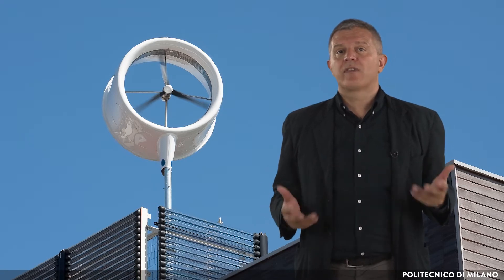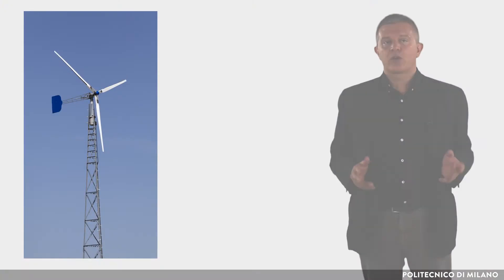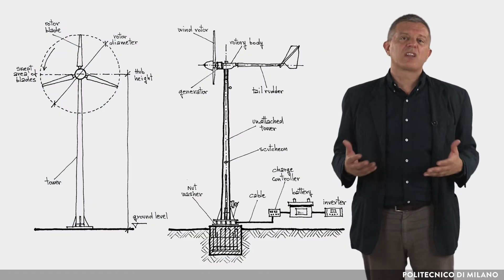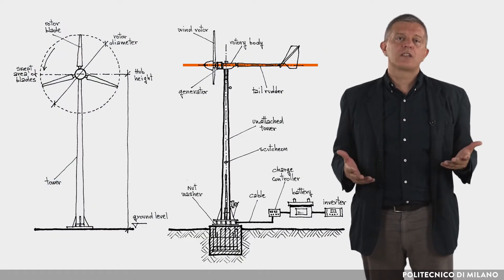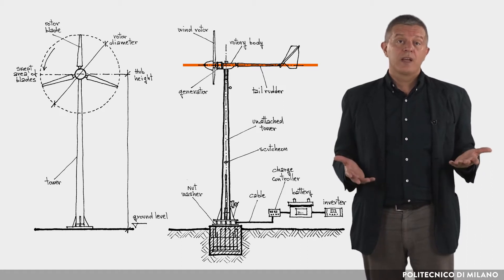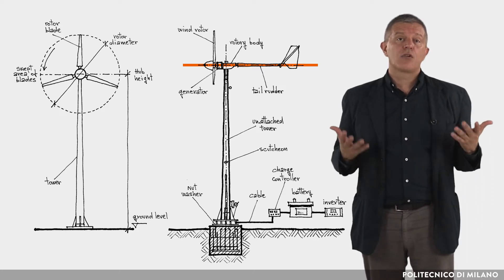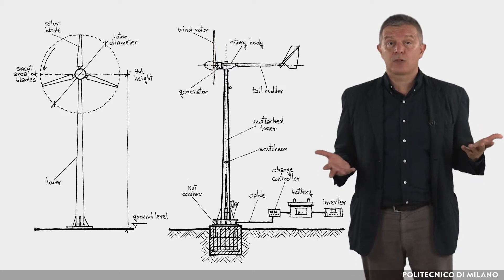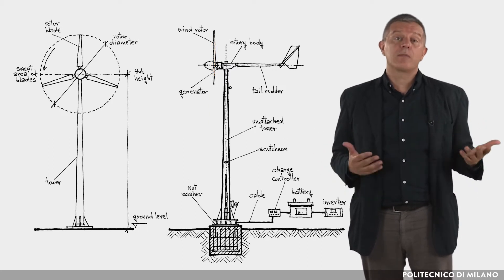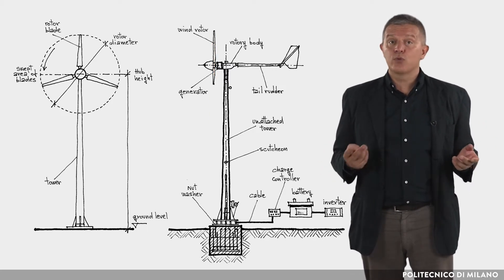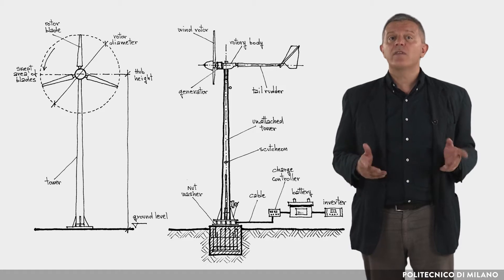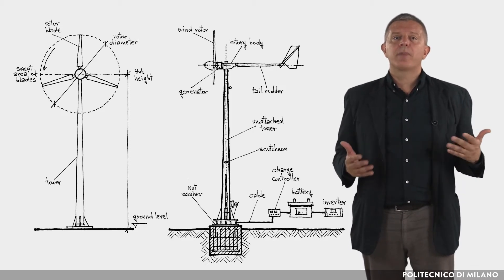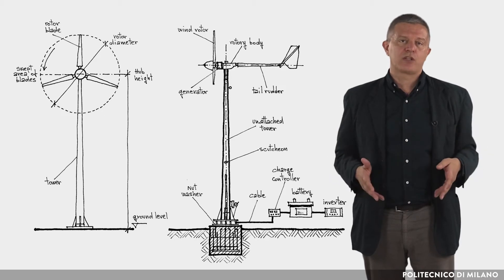Wind turbines can be of two different types: horizontal axis and vertical axis. In the former, which are the most common, the rotation axis is horizontal and the blades rotate in a vertical plane. A typical horizontal axis wind turbine generally has 3 blades, but there are cases of 2-bladed and even single blade models. A rudder keeps the blades plane always facing the wind direction.